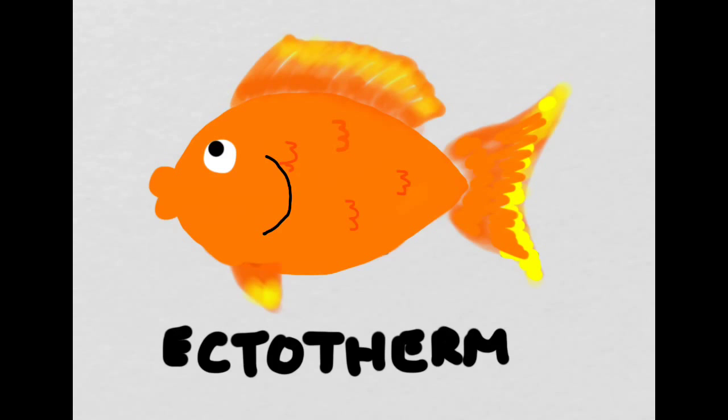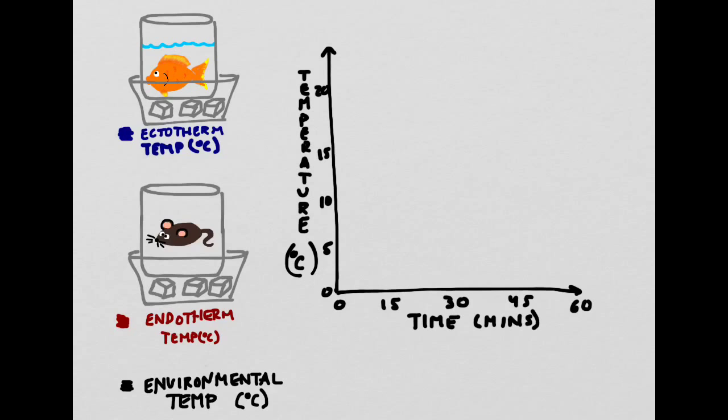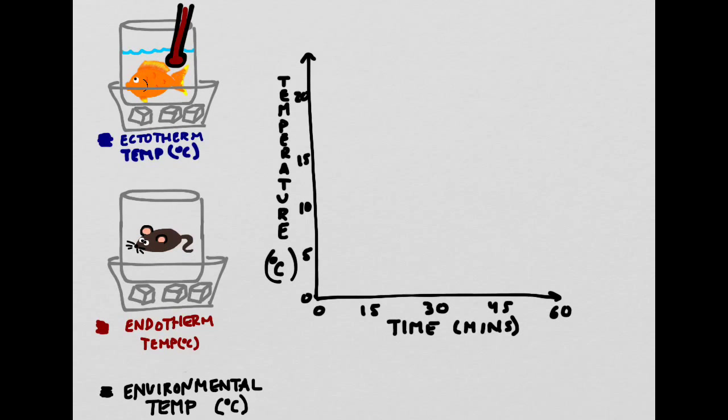During our goldfish lab, you learned about ectotherms and what happens to them if the temperature around them changes. We're now going to take a look at what happened to our goldfish when we placed its fish bowl into a container of ice. We're also going to imagine what would have happened to an endotherm, such as a mouse, if we had recreated the same experiment.